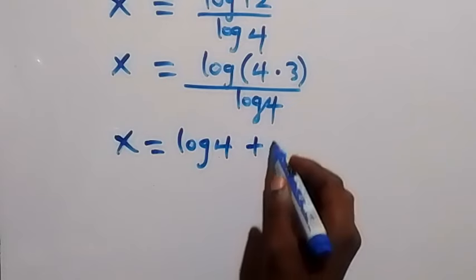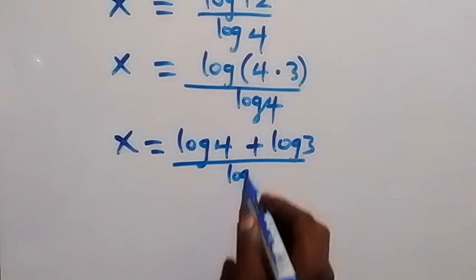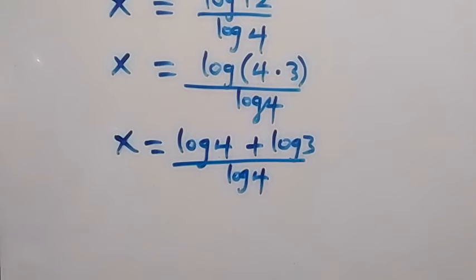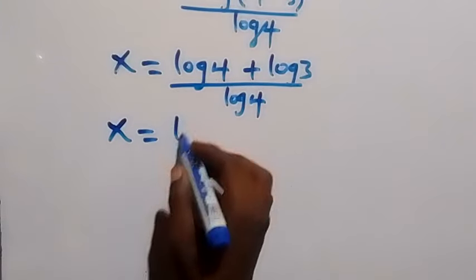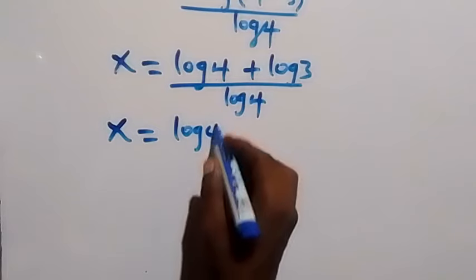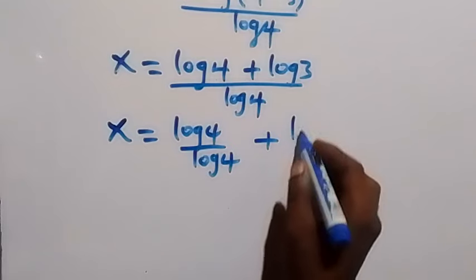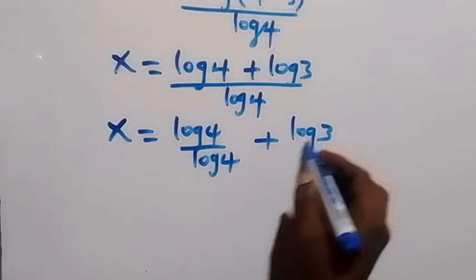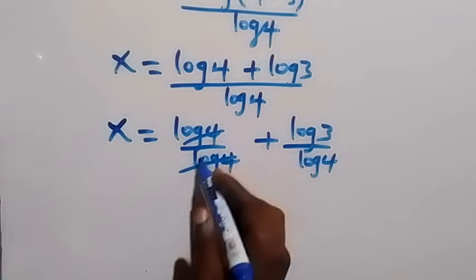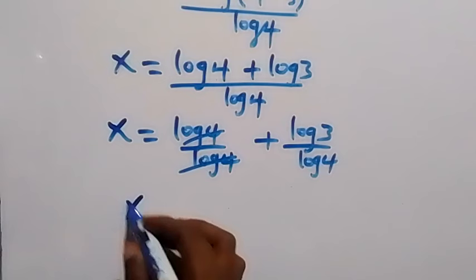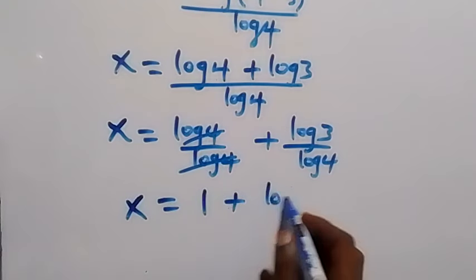Which we can separate into two fractions. This will be x equals log 4 over log 4, and from here log 4 cancels out that becomes 1. So we have x equals 1 plus log 3 over log 4.